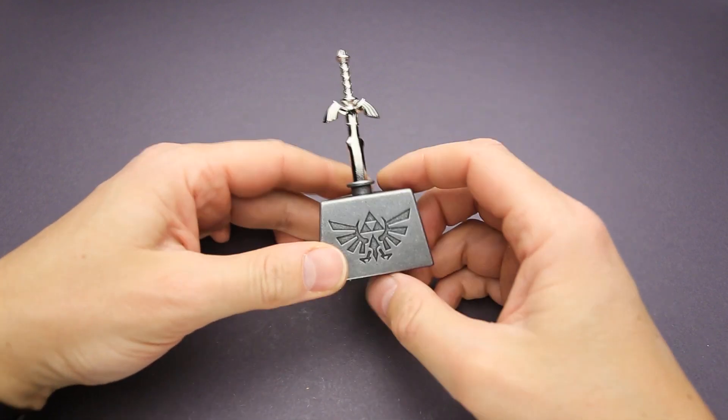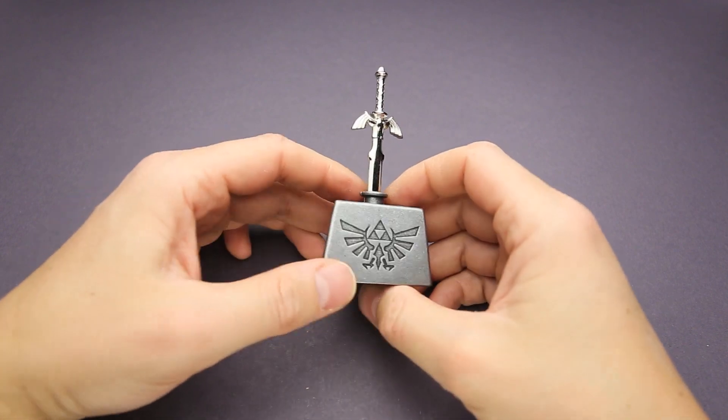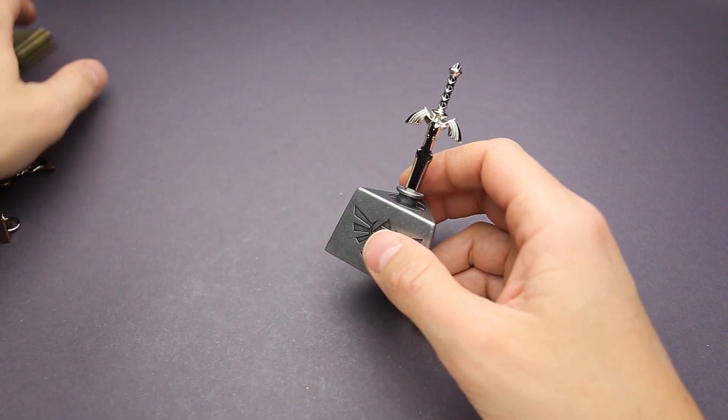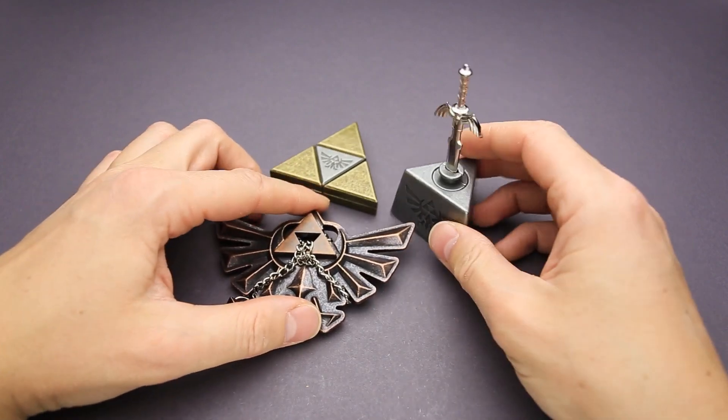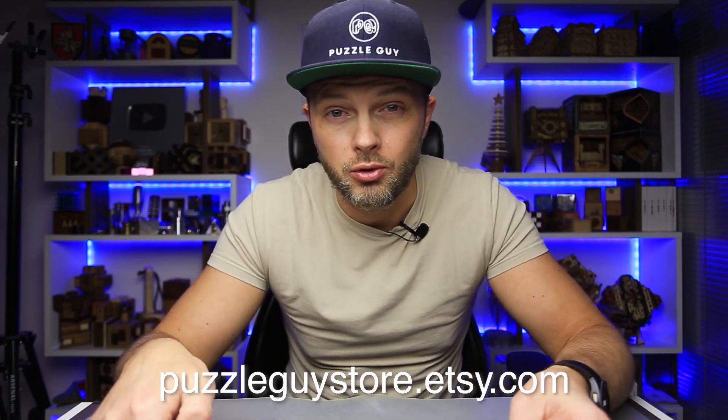And that's how you solve the Master Sword puzzle. It took me about 10 minutes to take it apart and reassemble it back together. And in total, I spent less than 20 minutes solving three new puzzles from Hanayama. That was my attempt to solve all three puzzles from Hanayama's Legend of Zelda series. If you like any of these puzzles and you want to buy them, link will be in the video description. And don't forget to check my Etsy store since I have some unique puzzles for sale that are not available in any other puzzle stores. Thank you for watching the video. See you next time.